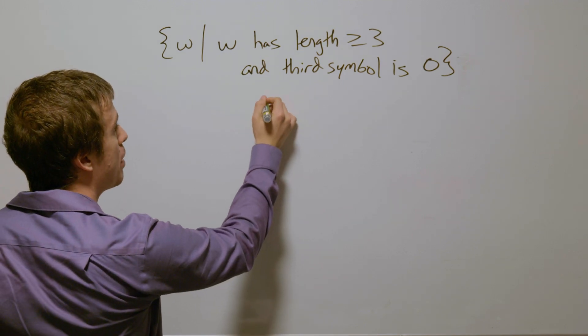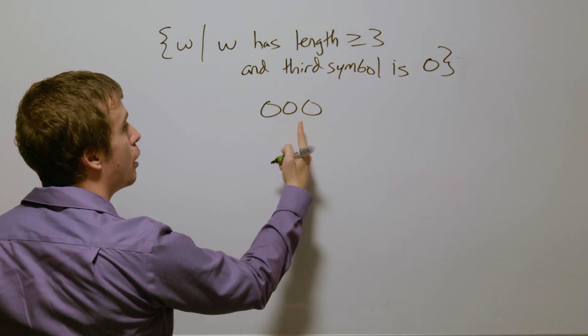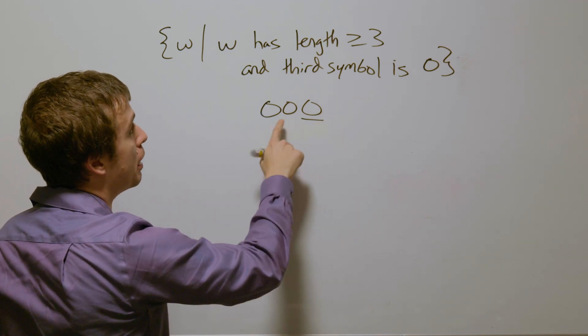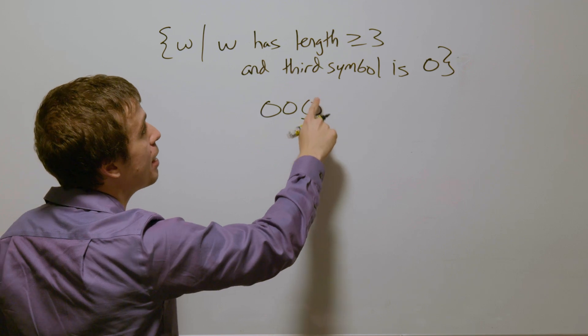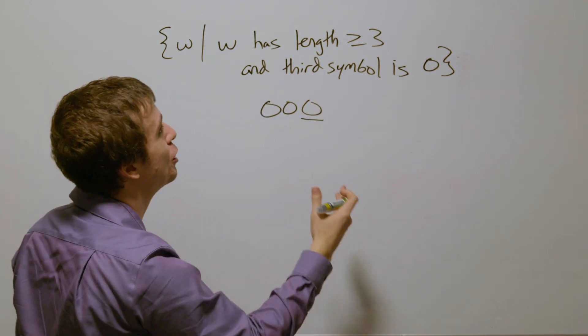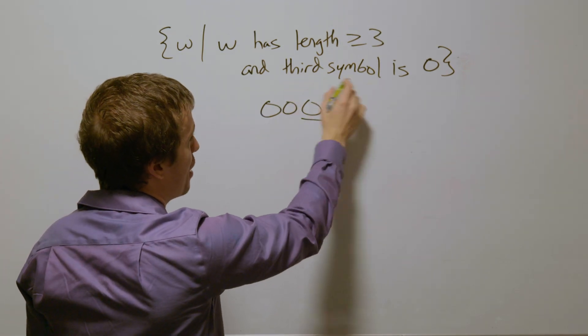As an example, if we have 000, its third symbol is a zero. That's okay because it has length at least three in order to have a third symbol in the first place, and the third symbol is zero.